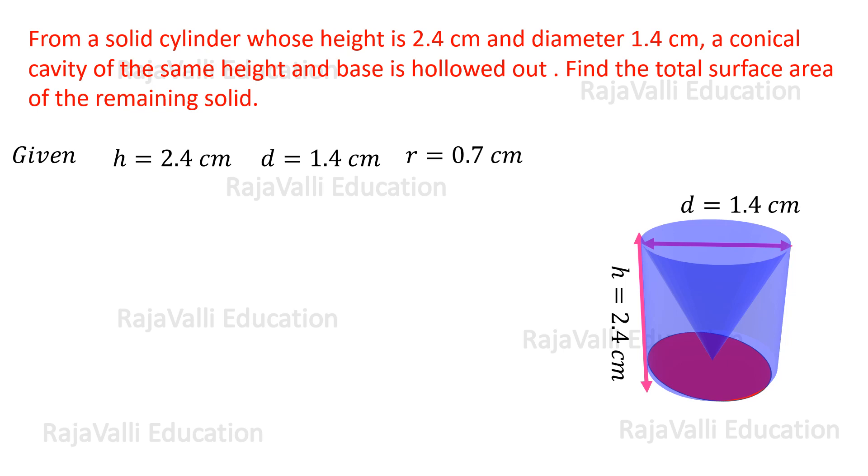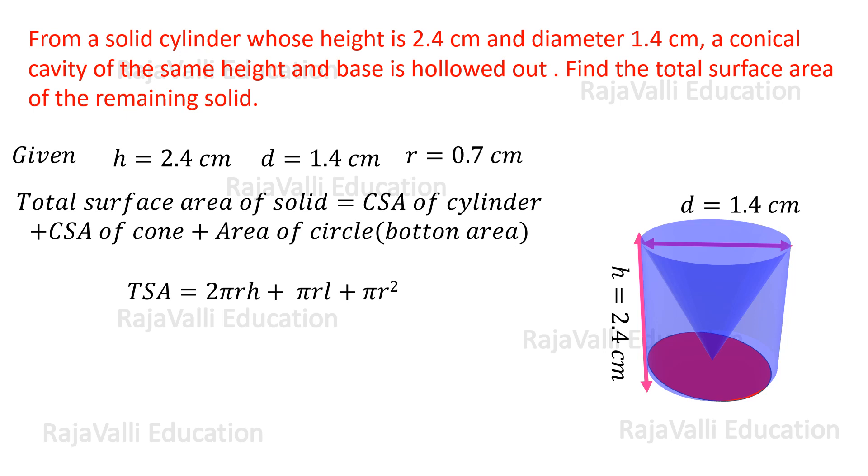To calculate the TSA, we have taken CSA of cylinder plus CSA of cone plus area of the base of the cylinder. We are not taking the top portion of the cylinder because we are hollowing it out on the top.